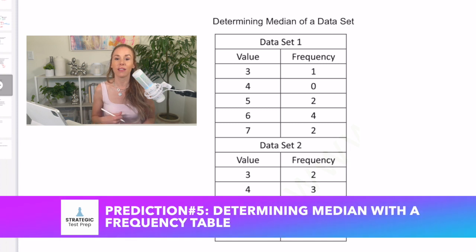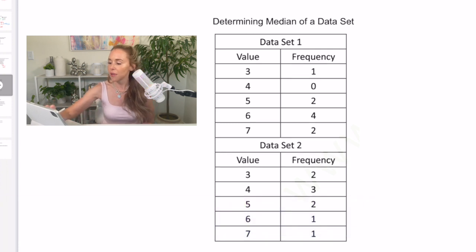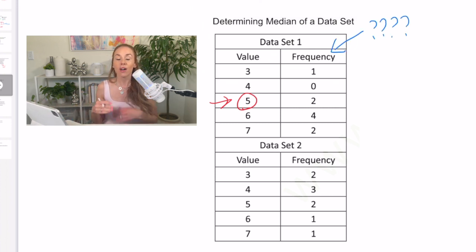Okay, determining median of a data set. The SAT throws these in to try to confuse students. And you have to be really careful because what you don't want to do when you get to a question like this is just go right to the middle value. We can't say, oh, the median value of a data set is 5 because it's in the middle of 3 and 7. You know, every single bit of information they give you on this test you're going to use. So you've got to be wondering, well, why are they giving me this other column, right? Frequency columns are important because it tells you how many times each value is counting.